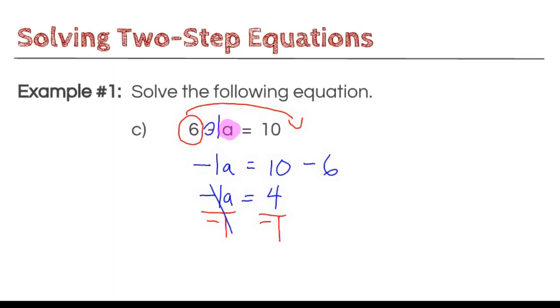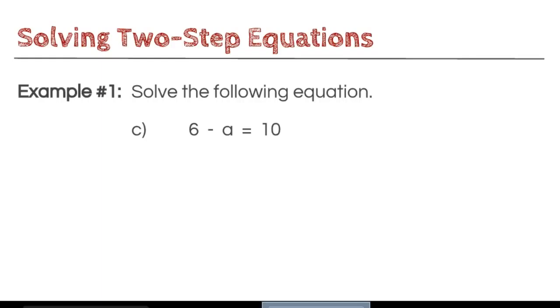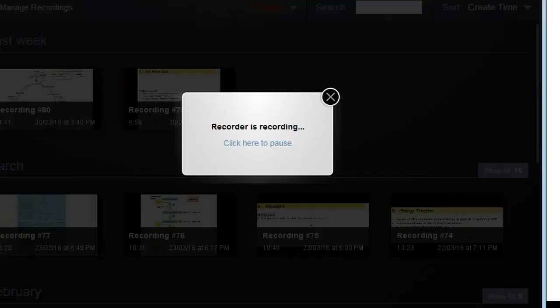So I'm going to divide by negative 1 on each side and then simplify. So a is equal to 4 divided by negative 1 gives me negative 4. So if the integers have been an issue for you in the past, I would highly suggest that you do a check or you go ahead and you use your calculator to verify your solution.